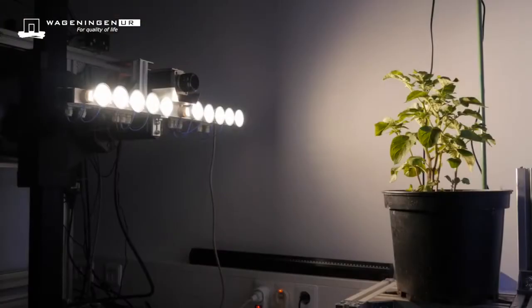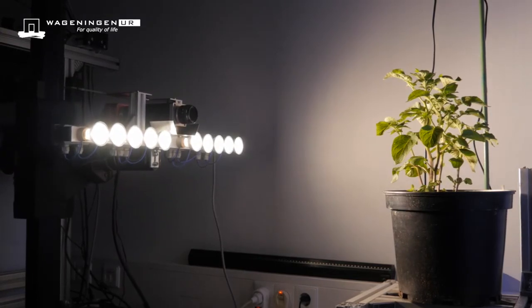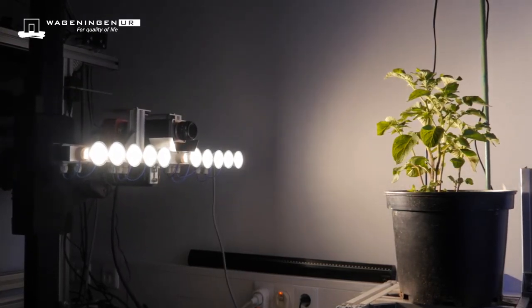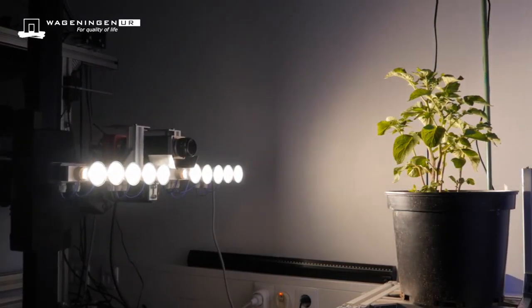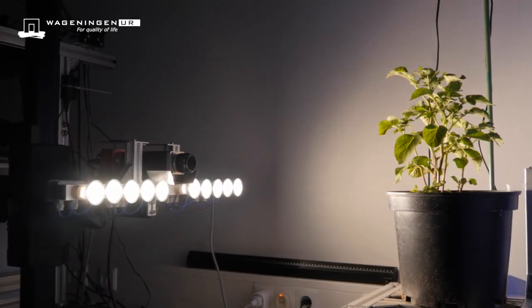The spectral power distribution of the lamp is an important factor. Our tungsten halogen light sources give a smooth and stable emission spectrum over the whole spectral range.